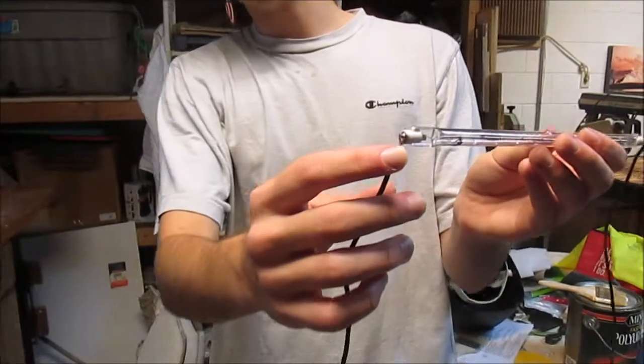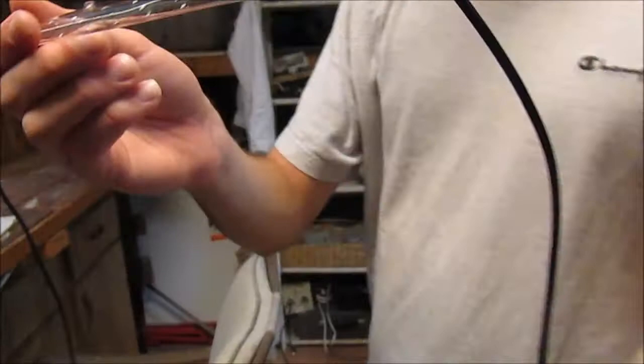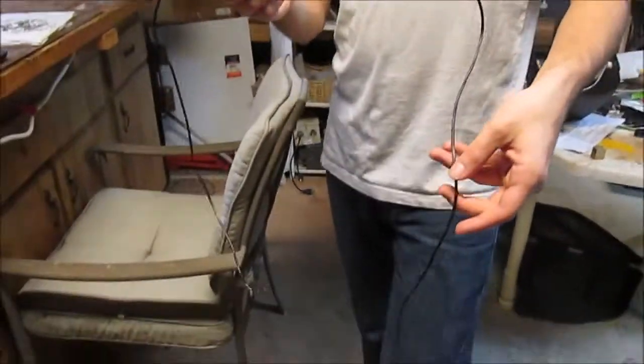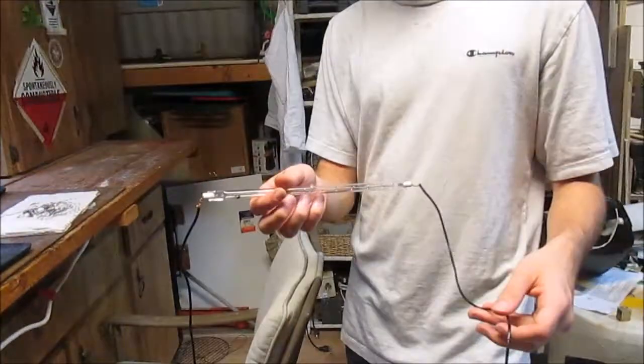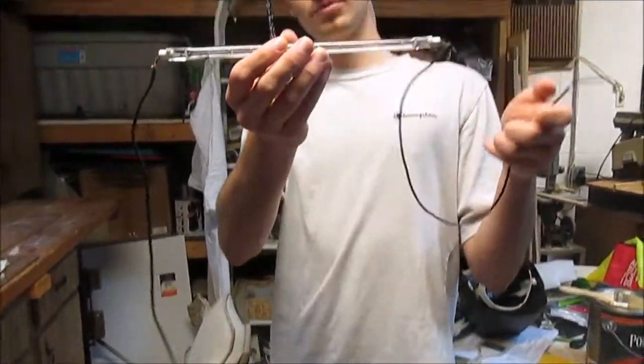So we've soldered onto the ends of it just some wires. So we're going to attach this to our transformer between the outputs. That way, before you can actually close the circuit, it has to run through here.